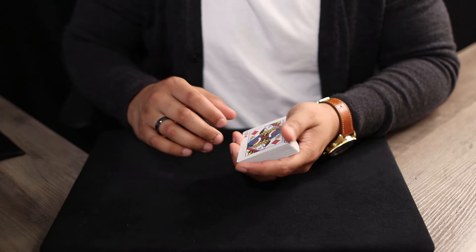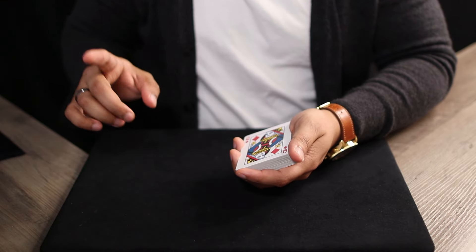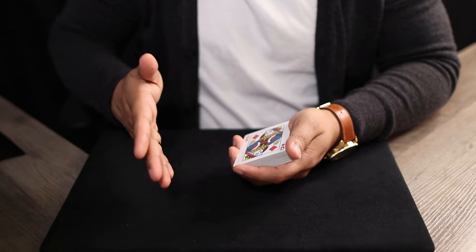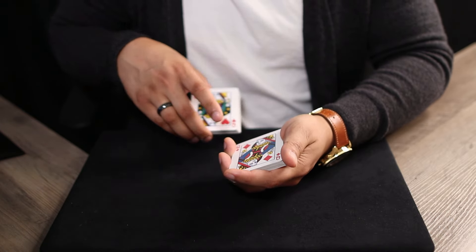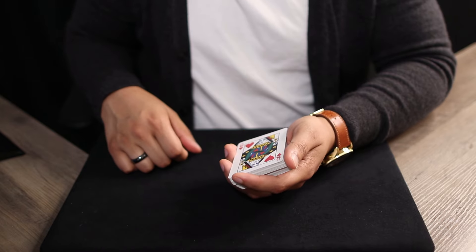So quickly, just to recap, we have the four of diamonds, first card selected, and then we have the queen of diamonds. But the four of diamonds is sandwiched between the two jokers, which are somewhere in the center of the deck.